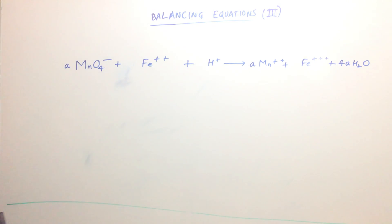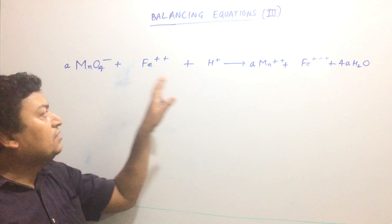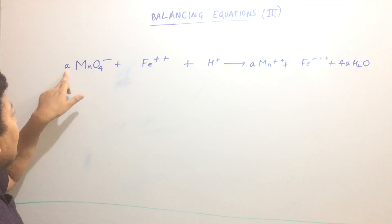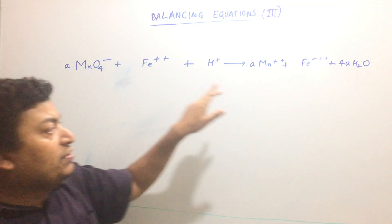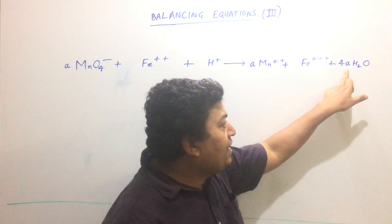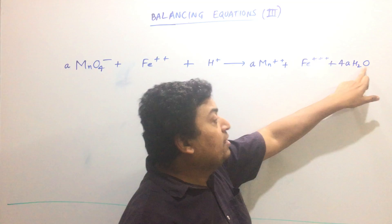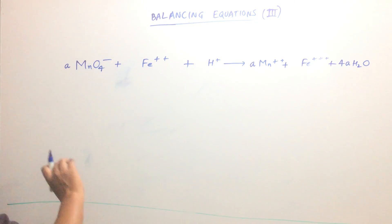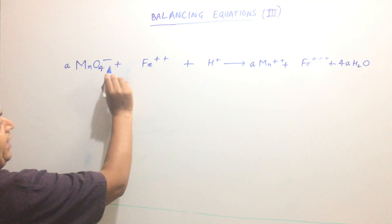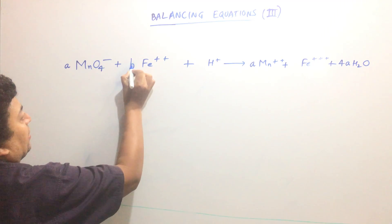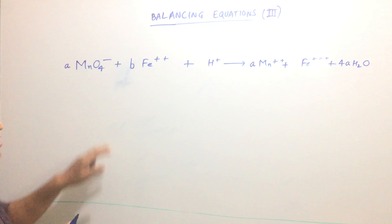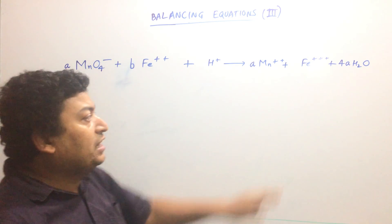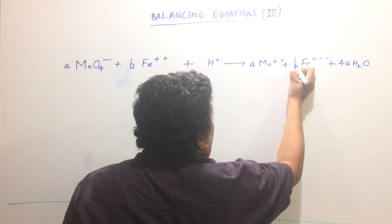Because oxygen does not appear anywhere else other than this and this, we must make sure that 4A atoms of oxygen appear on the right-hand side also. Now suppose I write B here. Iron appears here and here only, that means I must write B here as well.